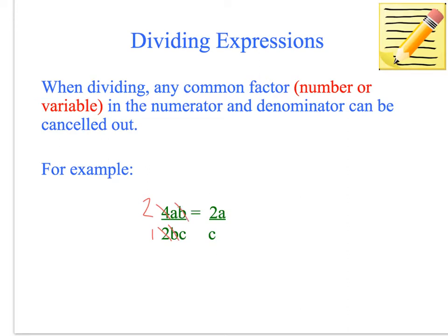So then what we've got left is 2A divided by C. Remembering, we never write 1C — it's always just C. So that's really important to understand, because you'll be using that a lot in what we're doing next.